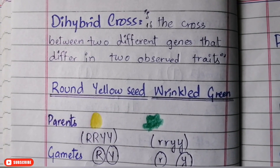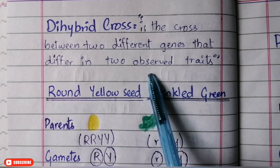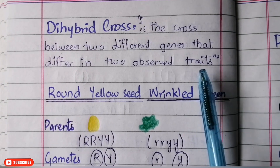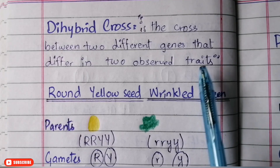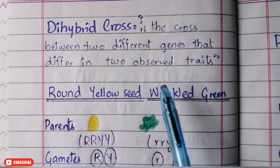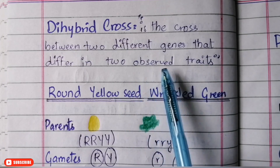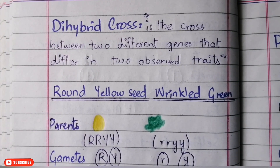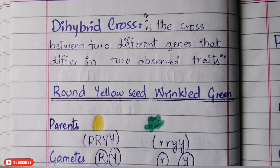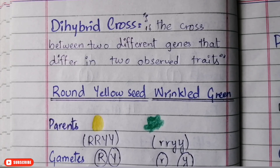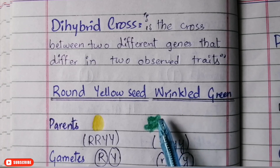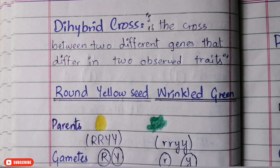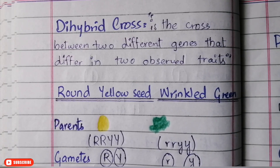Now we will look at what is a dihybrid cross. A dihybrid cross is the cross between two individuals differing in two observed traits. In the monohybrid cross, we discussed only one trait — the height of the plant. In the dihybrid cross, we study two traits side by side. Mendel studied two traits of the pea plant: the shape of the seed and the color of the seed, crossing round yellow seeds with wrinkled green seeds. This is known as a dihybrid cross.